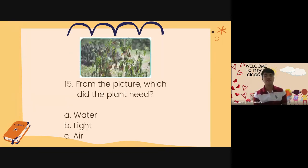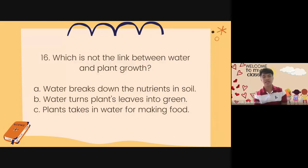Number 15. From the picture, which did the plant need? A. Water. B. Light. C. Air. Number 16. Which is not the link between water and plant growth? A. Water breaks down the nutrients in soil. B. Water turns plant leaves into green. Or C. Plants take water for making food.